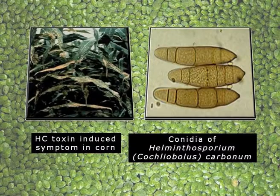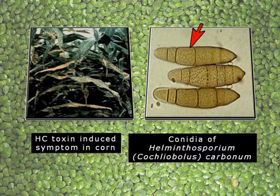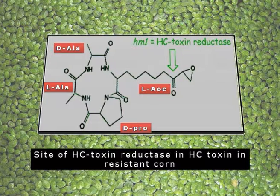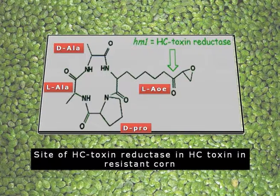The next important host-specific toxin is from Helminthosporium carbonum, also called Cochliobolus carbonum — in other words, HC toxin — which causes the common leaf spot disease of maize. This is how the leaf spot occurs in maize, and the maize leaves are dead. The cyclic structure of HC toxin is a tetrapeptide containing L-alanine, D-alanine, L-AOE, and D-proline. HC toxin will ultimately inhibit protein synthesis. Some maize plants are resistant due to a unique HM1 or HM2 gene, which produces a specific enzyme called HC toxin reductase, whereby the L-AOE protein is inhibited, the toxin is rendered ineffective, and the plants show resistance.